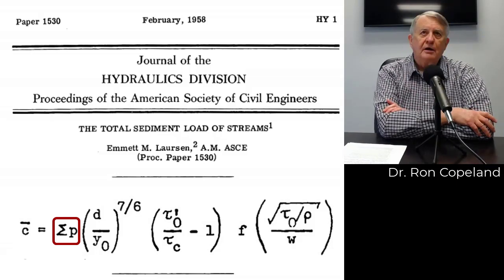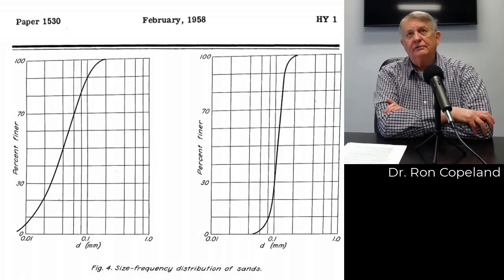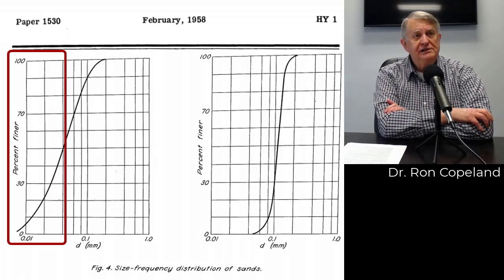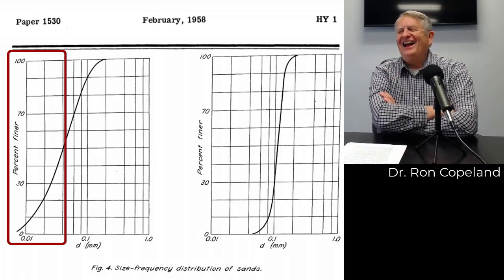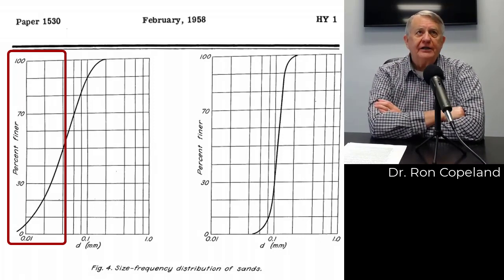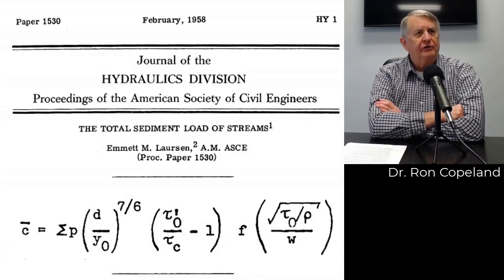At the time there weren't very many size-class equations — Toffaleti, Einstein. But Larson's equation wasn't developed for gravel; there was no gravel in his test data. He did have an interesting factor in that he also had data for very coarse silt, which I think is the only transport function that goes into that range. So basically what I did was look at his equation and see how we could modify it for gravels, because the equations we had weren't transporting gravels sufficiently.